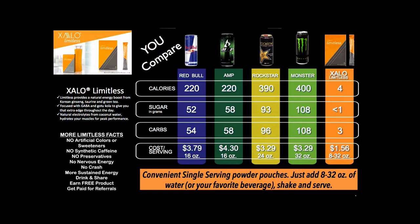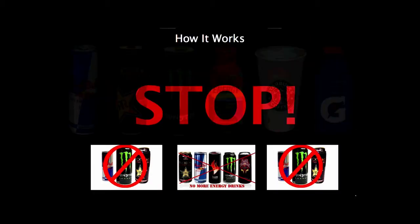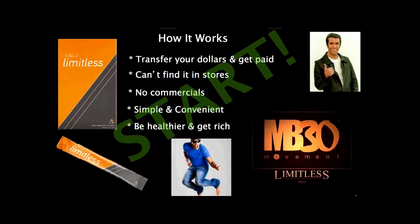We spend time on that because we can then tell this generation — some of whom live paycheck to paycheck — about transfer buying. We say this is how simple the business is: stop drinking all the bad stuff, and all that money you spend every day going to Starbucks or buying energy drinks, simply take that money and buy Limitless. You just start drinking this, and that's it. Then you drink and share. Other companies are not going to pay you to drink and share their products, but Zango does.